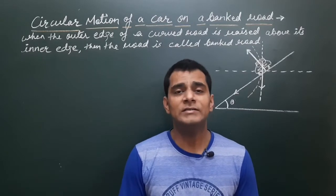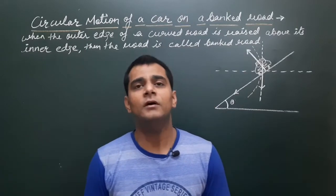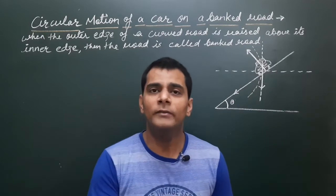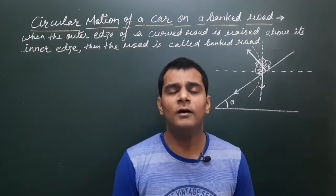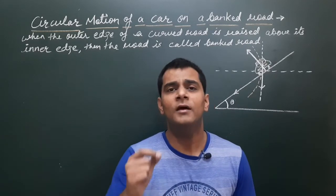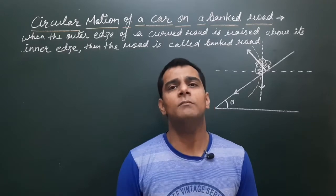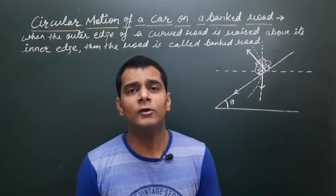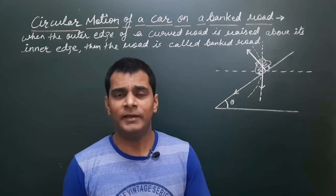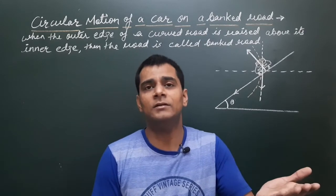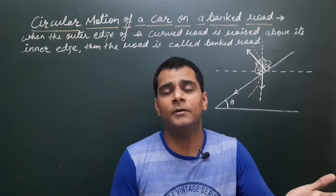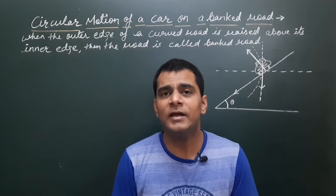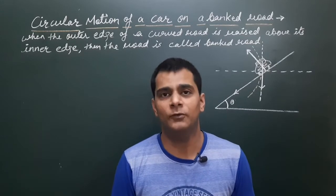Hello everyone. In this lecture you will learn about the circular motion of a car on the banked road. First of all, we define what is the meaning of the banked road. A banked road means that if one edge of a road is raised to a higher level compared to the other edge, then such type of road is called the banked road.